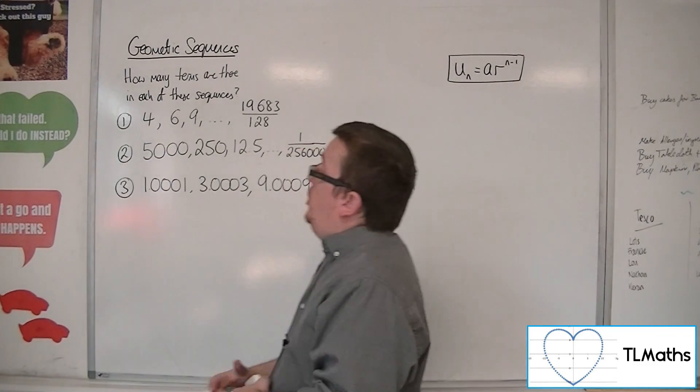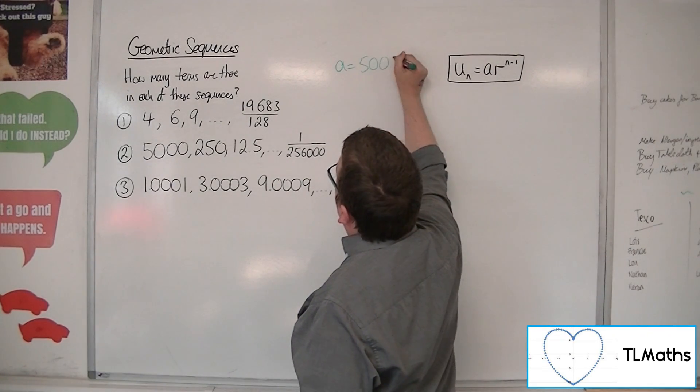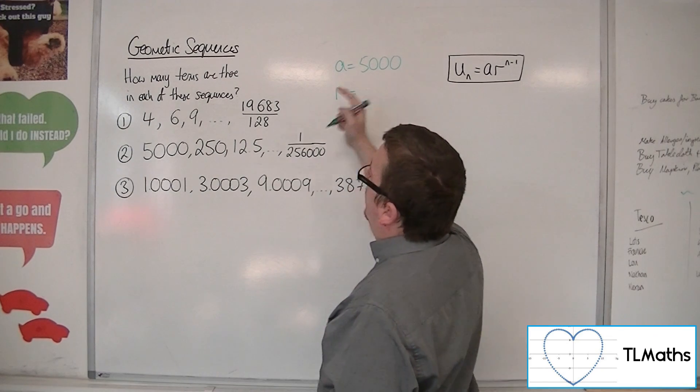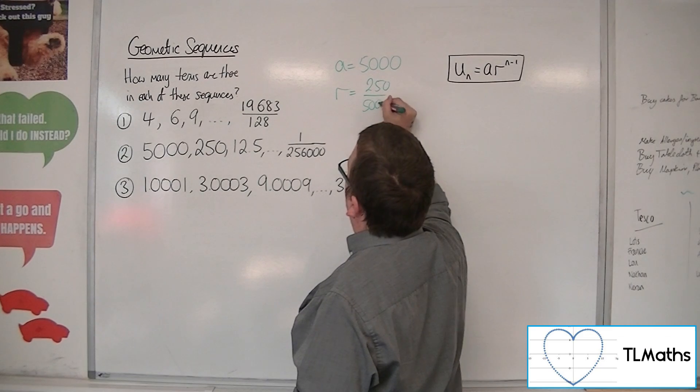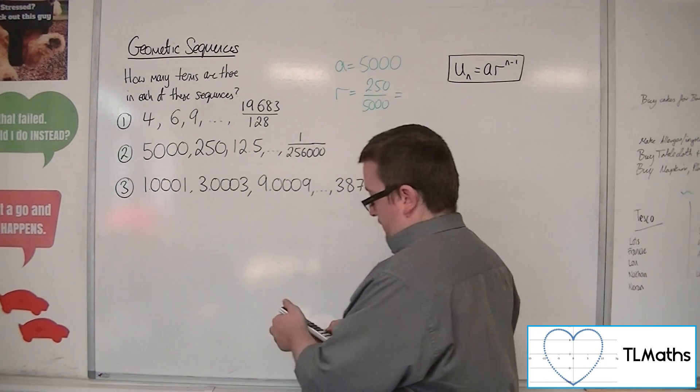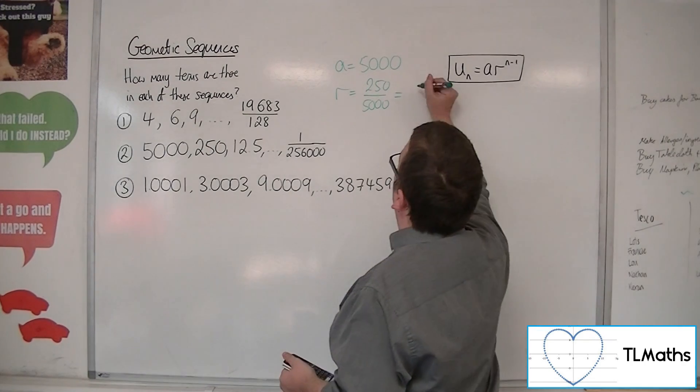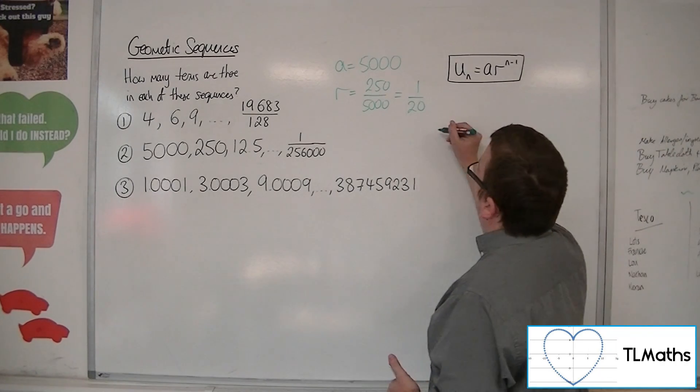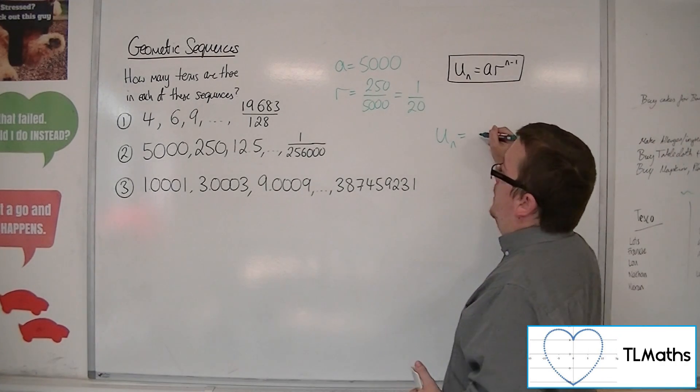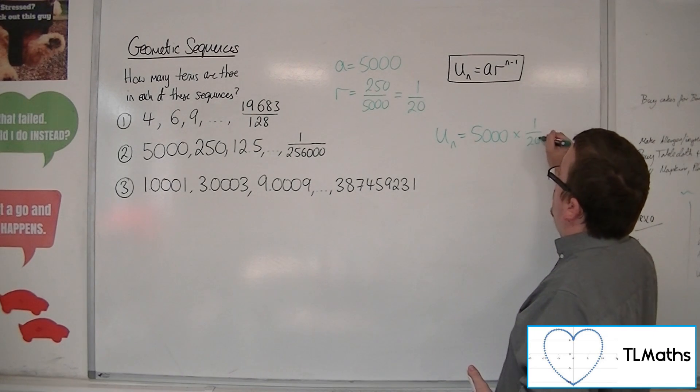So let's have a look at number 2. So 5000 is clearly the first term, and the common ratio, 250 divided by 5000, is 1 twentieth. So the common ratio is 1 twentieth. So the nth term is the first term, 5000, times by the common ratio, 1 twentieth, to the power of n minus 1.